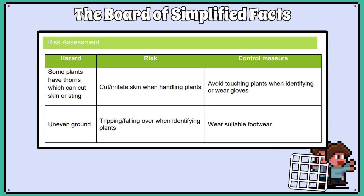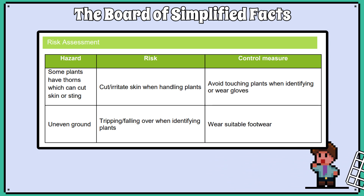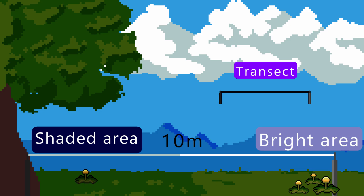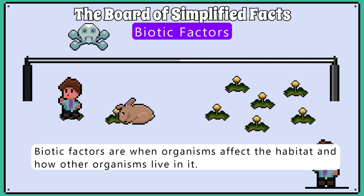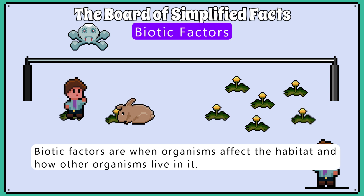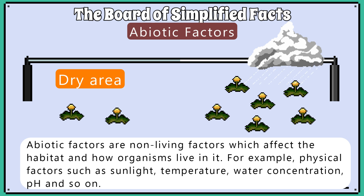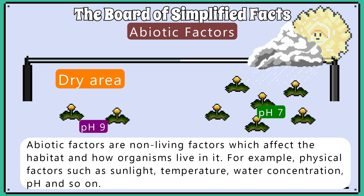Transects are used to show how abundance can change across an area due to certain factors. Biotic factors are things like diseases, predation, and general animal activity such as trampling. Or we could have abiotic factors such as water content, soil pH, and light intensity.